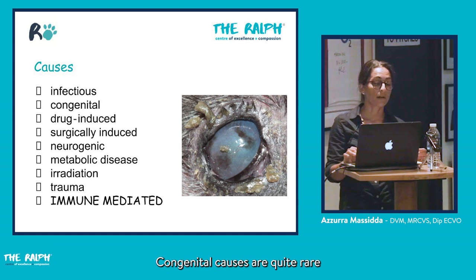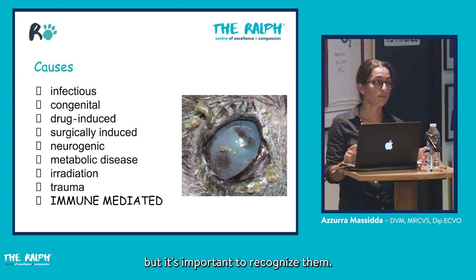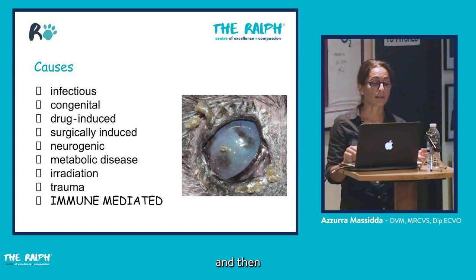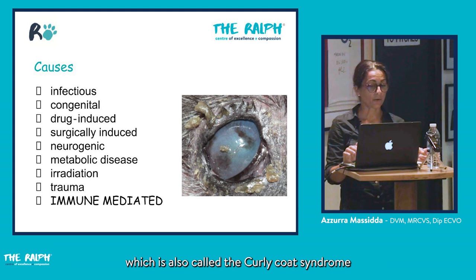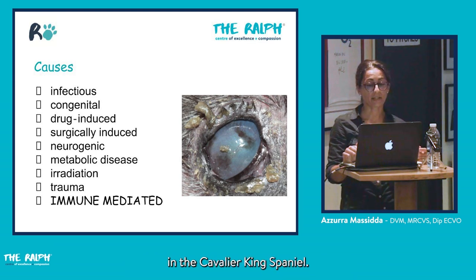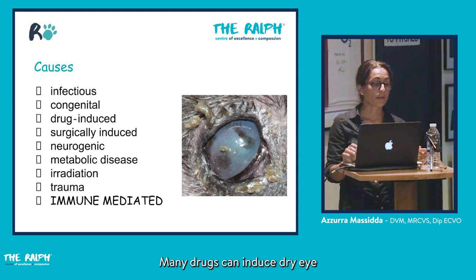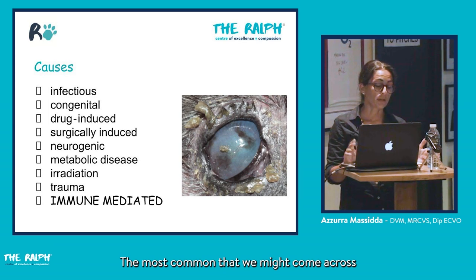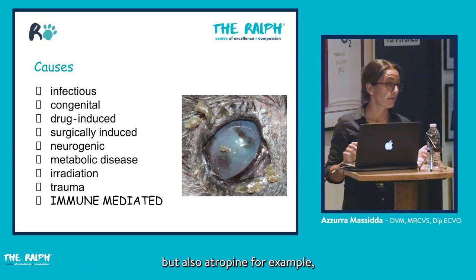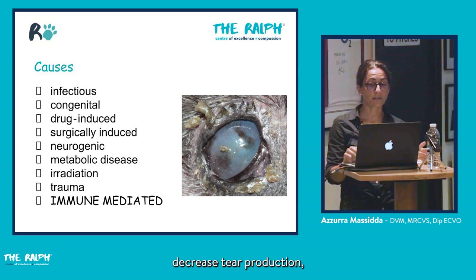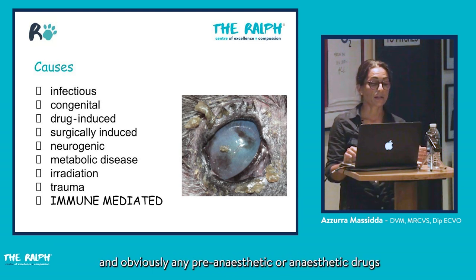Congenital causes are quite rare but important to recognize. Don't forget ichthyosiform dermatosis, also called the Carley-Cott syndrome in the Cavalier King Charles Spaniel. Many drugs can also induce dry eye — the most common in general practice are sulfonamides and atropine, both systemic and topical, which decrease tear production, as well as any pre-anesthetic or anesthetic drugs.